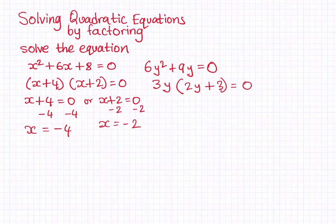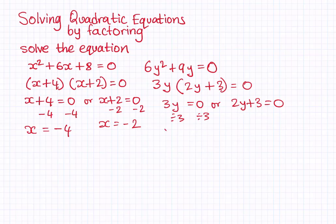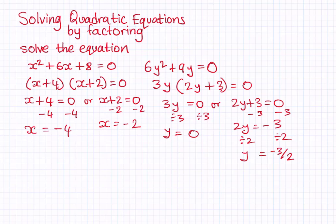We can say 3y equals 0 or 2y plus 3 equals 0. From the first equation, dividing both sides by 3 gives y equals 0. For the second, subtracting 3 gives 2y equals minus 3, and dividing by 2 gives y equals minus 3 over 2. So the answers are y equals 0 and y equals minus 3 over 2.